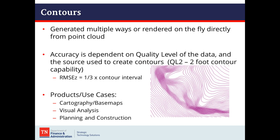Contours are the last product we're going to discuss. They can be generated multiple ways or rendered on the fly directly from the point cloud. Accuracy is dependent on the quality level of the data, which translates to a two-foot contour capability with QL2 data. You can certainly generate a one-foot contour, but it may not meet your accuracy needs. Products and use cases include cartography, base maps, visual analysis, and the largest use being planning and construction.